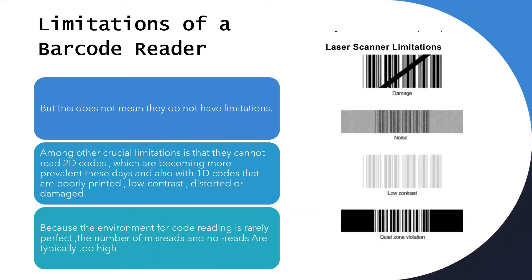Limitations of a barcode reader. These applications do not mean they have no limitations. Among other crucial limitations is that they cannot read 2D codes, which are becoming more prevalent these days, and also 1D codes that are poorly printed, low contrast, distorted or damaged. Because the environment for card reading is rarely perfect, the number of misreads and no-reads are typically too high.